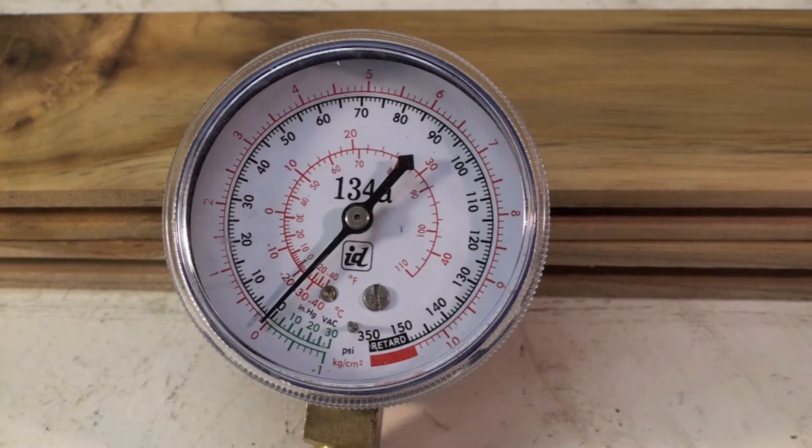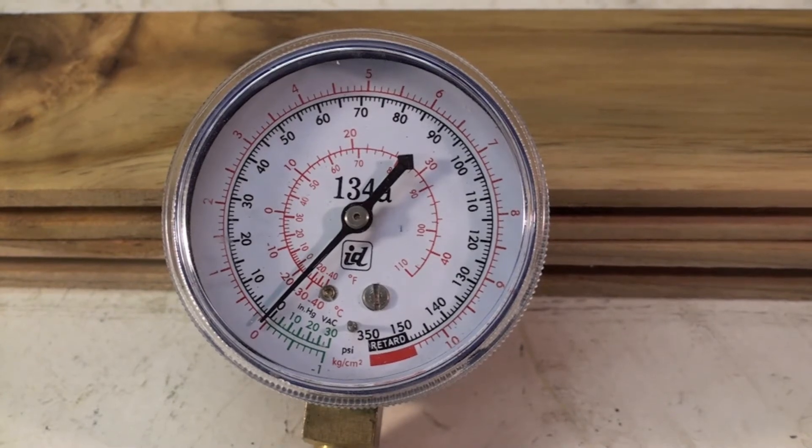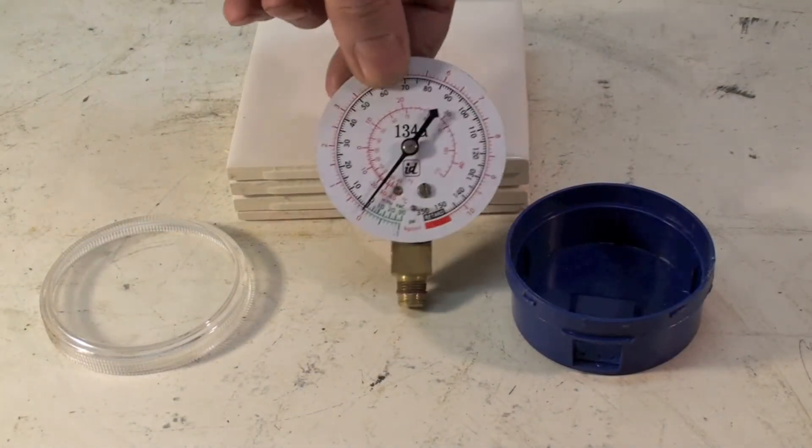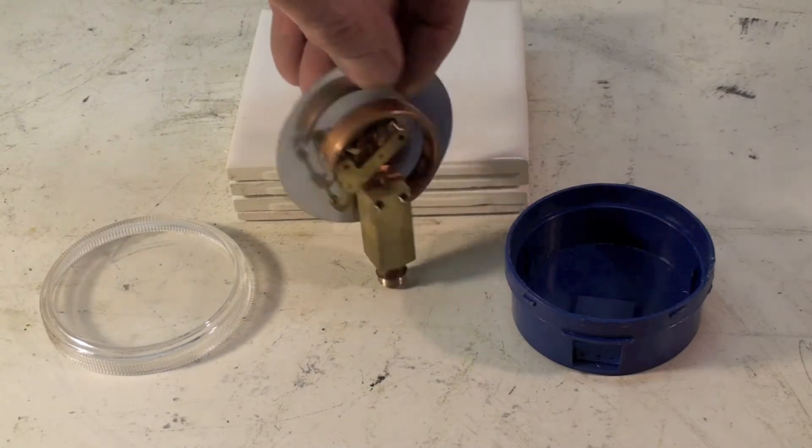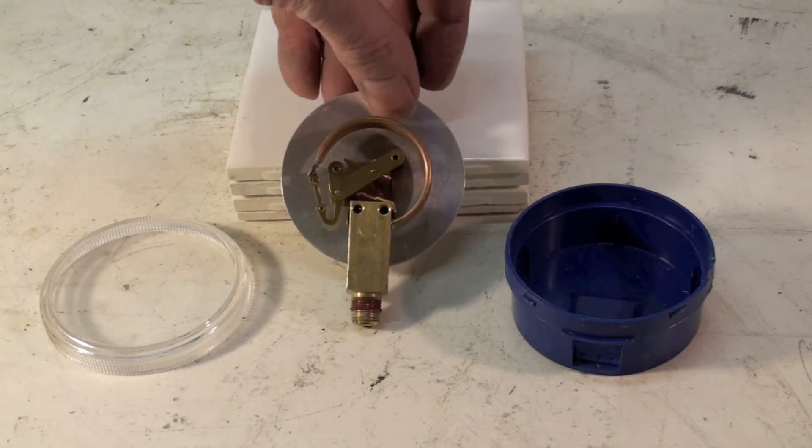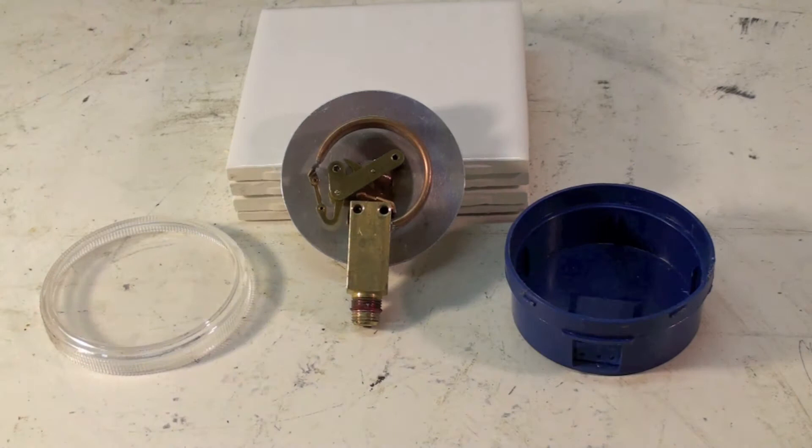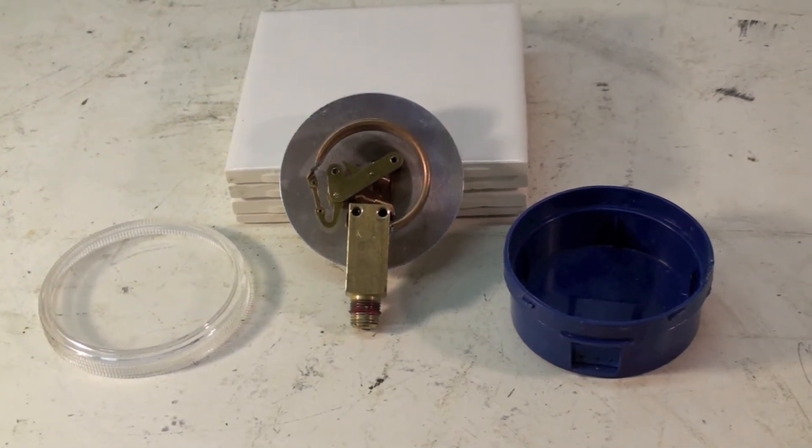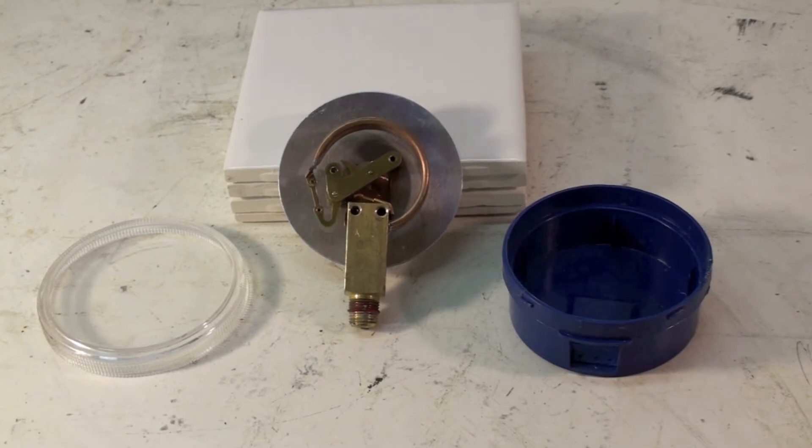I'm going to take this thing apart and we'll look at how it works inside and what makes it do what it does. Okay, this is that gauge right there as we've taken this thing apart, taking the bezel off and the backing off and we'll take a look at what makes this thing do what it does.